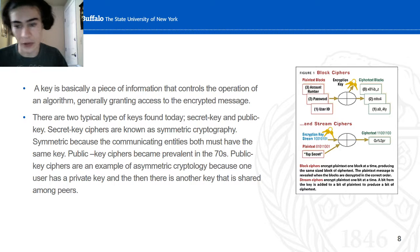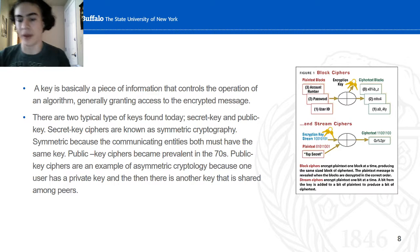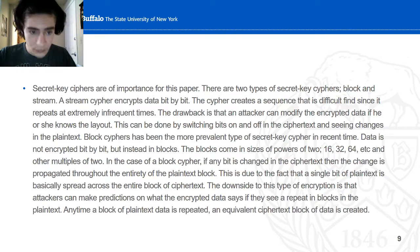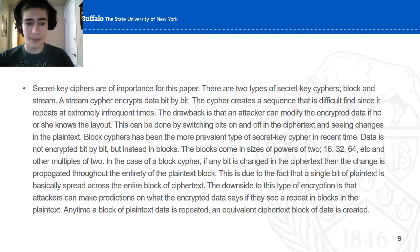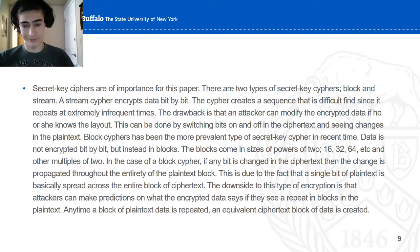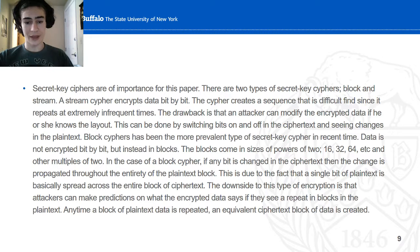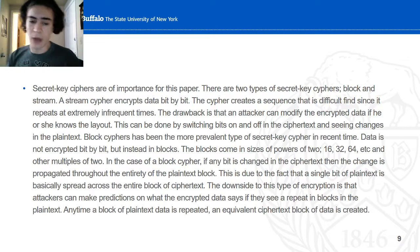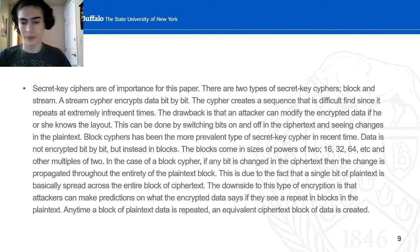On the right, there's a block cipher diagram and a stream cipher diagram, showing how plaintext blocks come in and ciphertext comes out. Secret key ciphers are important to this paper. There are two types: block and stream. Stream cipher encrypts bit by bit. Block cipher encrypts block by block, in sizes that are powers of 2 — 16, 32, 64, etc. In the case of block cipher, if anything is changed in the ciphertext, a change is propagated throughout the entirety of the plaintext block, creating a muddle of information — essentially the information is lost.